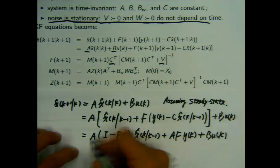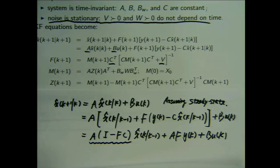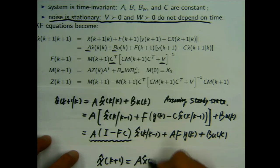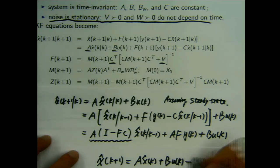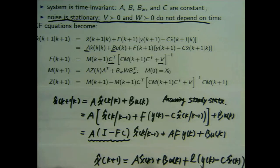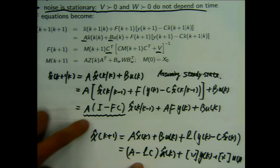You see the structure looks exactly like what I wrote. It's going to be (A - AFC) x-hat k|k-1 + AF y_k + B u_k. Something different appears here — it's not simply the A matrix. This is intuitive: in any standard observer design, the dynamics is A minus LC times x-hat k plus terms related to y and u. In the Kalman filter case, it's another type of A matrix.